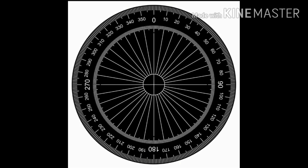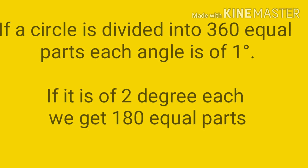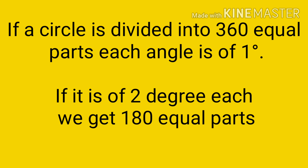See this figure. If a circle is divided into 360 equal parts, each part is 1 degree each. That means each angle is 1 degree each. And if it is 2 degrees each, we get 180 equal parts.